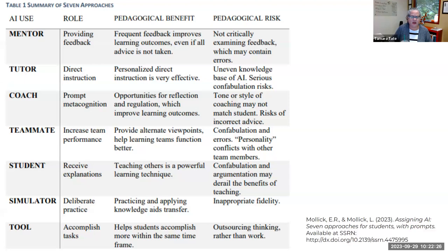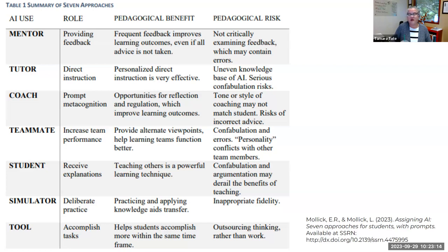This is a summary from Ethan Mollick about the kinds of things AI can be used for. I highly recommend the article 'Seven Approaches for Students with Prompts,' because it talks about how AI can be a mentor providing feedback, but also includes what the pedagogical risks and benefits are so you don't have to think through each alone. For example, as a mentor, AI isn't critically examining the feedback, so there may be errors. That's actually a learning opportunity — we can explain to students that feedback from an instructor, a peer, or AI might be wrong or helpful. That's an important place to make sure students are taking agency of their own writing and deciding what they want to take up.